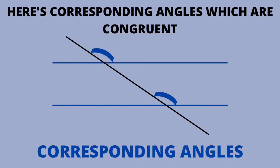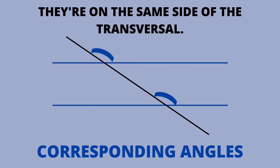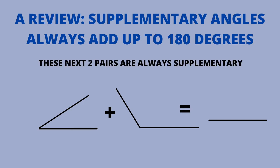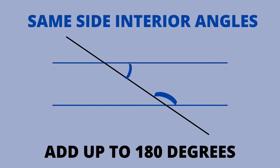Corresponding angles are congruent. They're on the same side of the transversal. Then there are angles which are supplementary, meaning these angles add up to 180 degrees. Same side interior and same side exterior angles are examples of supplementary angles.